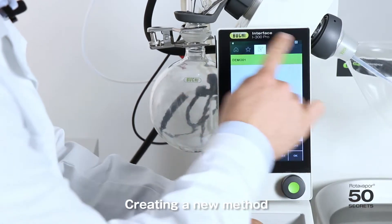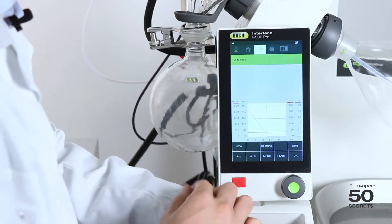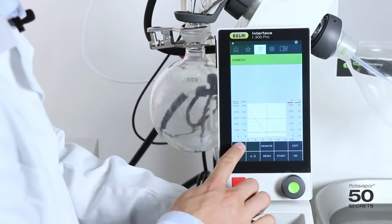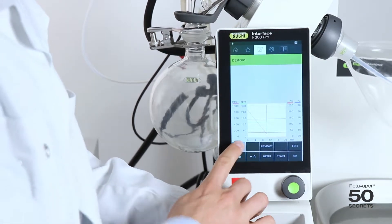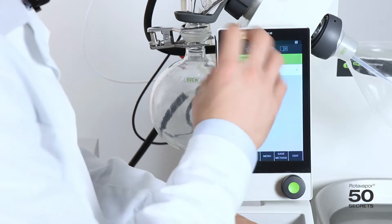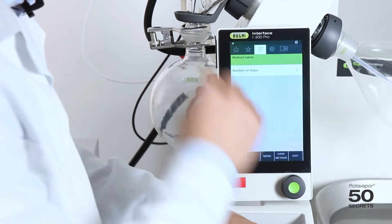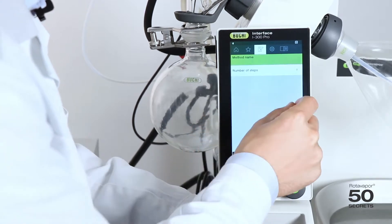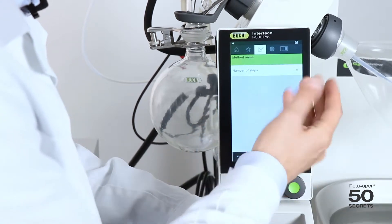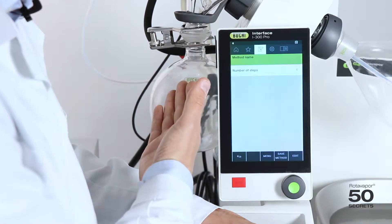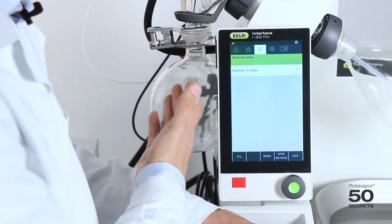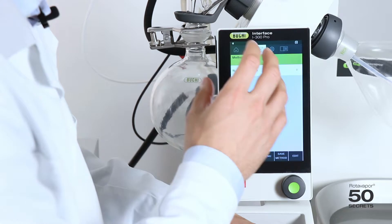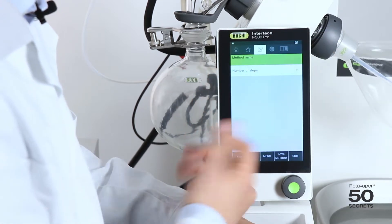We see already someone created a method here, but we want to create a new one. We would like to create a method which has four steps. The first step would be to go down from ambient to 100 millibar and then stay there for a few minutes. Then let the user replace the receiving flask and at the end we want to dry the sample. Let's do this.